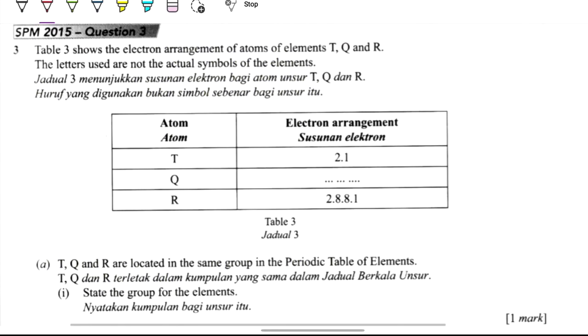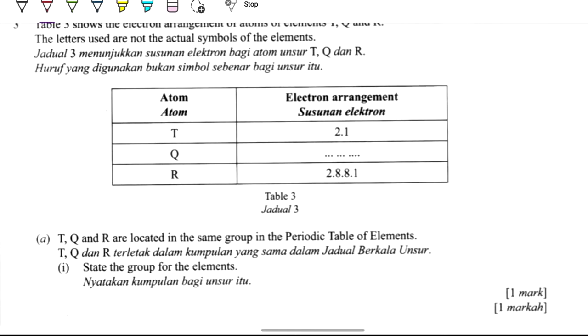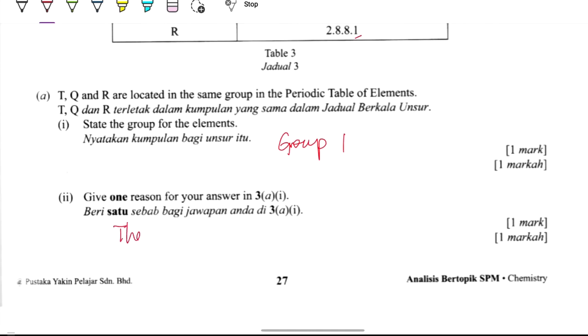Table shows the electron arrangement for the atoms of element T, Q and R. So T, Q and R are located in the same group in the periodic table. As we see, they are in group 1. State the group for the elements. So they are in group 1. Give a reason: because they have one valence electron.